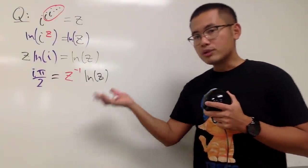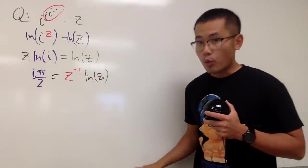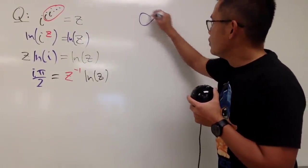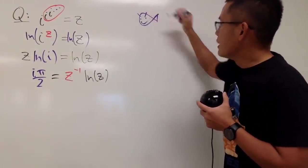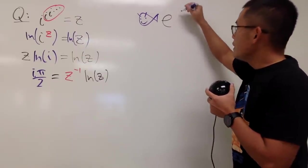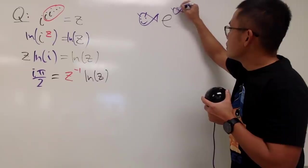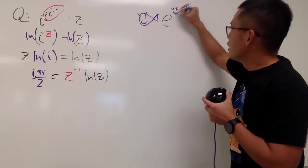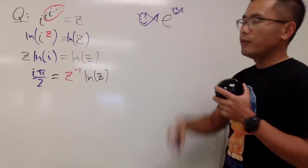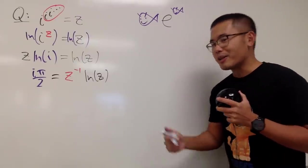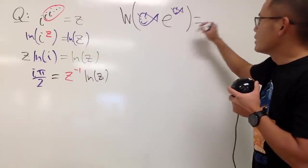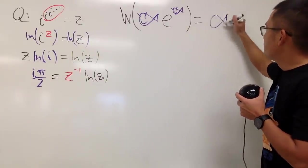Whenever we're trying to solve this kind of equation, we utilize the fish method. The idea is that you need to have a fish, then get an e, and hopefully another fish. This fish and that fish have to be the same. When you have these two matching fishes and this e, you can apply the Lambert W function and it gives you the fish back.